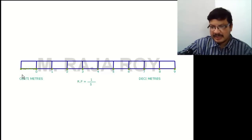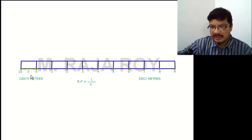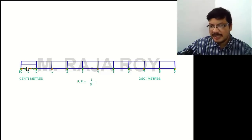Divide this small length into 10 parts by using the inclined line method to divide it into 10 equal parts. Give the numbering like this: 0, 1, 2, 3, 5, 6, 7, 8, 9, 10. Then draw a line at 5 mm height from the 10 mark — that means at the midpoint — draw a line like this; this gives a better appearance. Then draw the vertical lines like this.